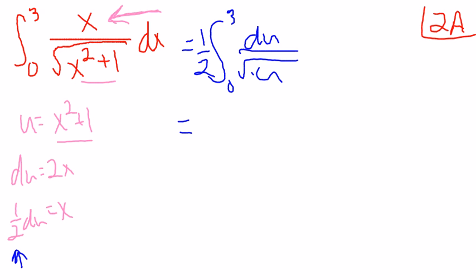So this is 1 half integral from 0 to 3 of, remember, x equals 0 to 3, I'm going to write it as u to the negative 1 half du. Well, that's actually not that bad, especially with that 1 half out front.